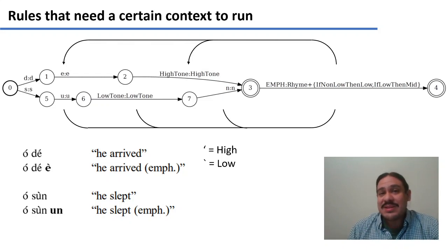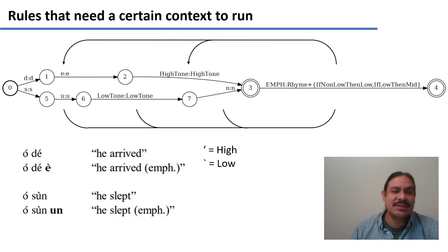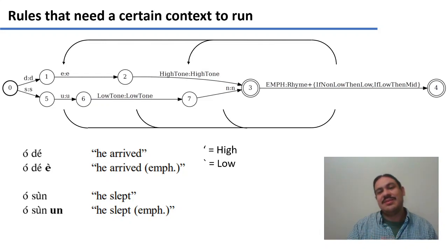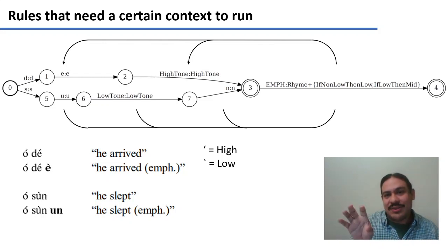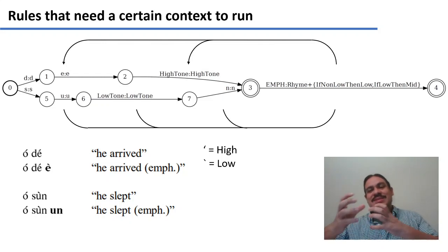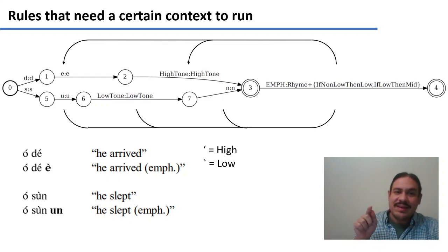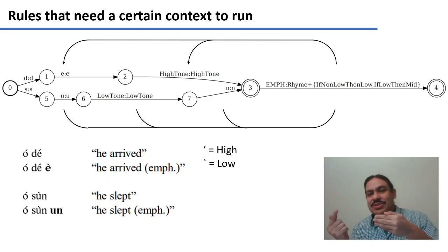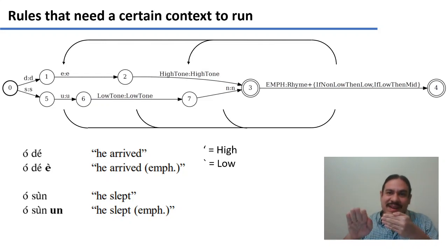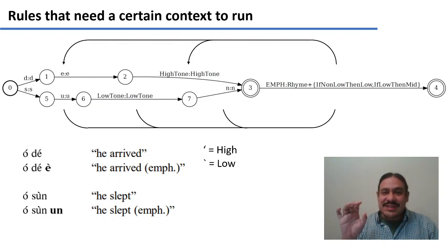Remember, automata are really abstractions of computer programs. We can have the generation of the emphatic be the transition of a finite state transducer from state three to state four: the emphatic becomes the rhyme — vowel and final consonants — plus, if the tone is not low, make it low; if the tone is low, make it mid. From states zero to three we have the input tones. The rule would need to look at a bunch of previous states in order to figure out what the emphatic output should be.